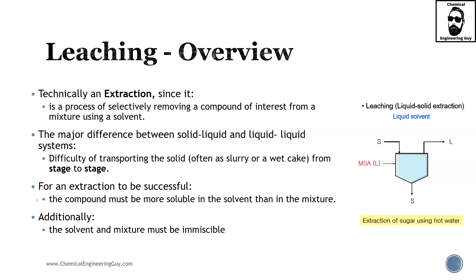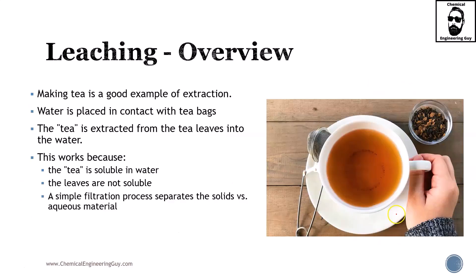For a solid extraction to be successful, the compound must be more soluble in the solvent than in the solid. Additionally, the solvent and the solid mixture must be immiscible — if the solid you want to extract dissolves completely with the solvent, you won't be able to separate anything. That would simply be a material dissolving in another with no mass transfer whatsoever.